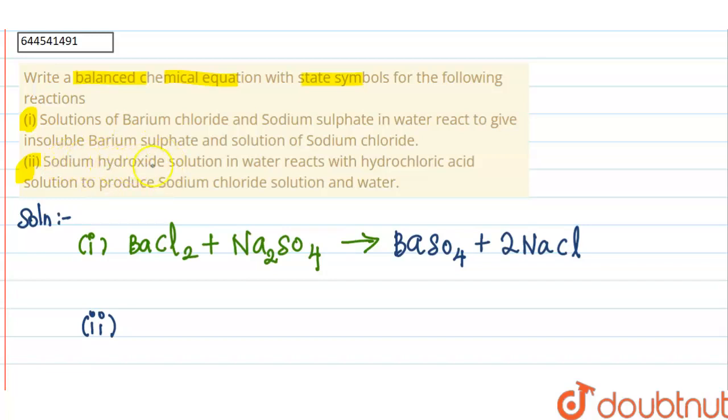The reaction is sodium hydroxide solution in water, so it will be written as NaOH, plus it will react with hydrochloric acid, HCl, to produce sodium chloride, NaCl, and water, H2O. So these are the balanced chemical reactions.